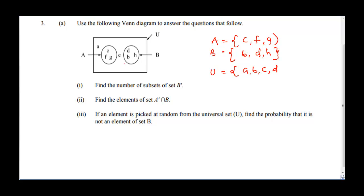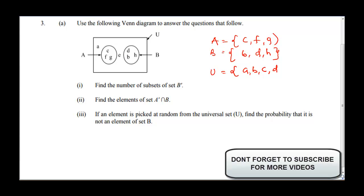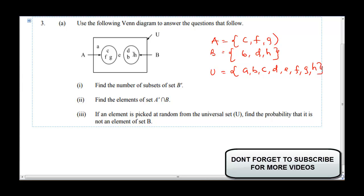Notice that E and A were not in any of the sets — E, F, G, and H. Let's count: 1, 2, 3, 4, 5, 6, 7, 8. And let's verify: 1, 2, 3, 4, 5, 6, 7, 8. Our Venn diagram is correct.